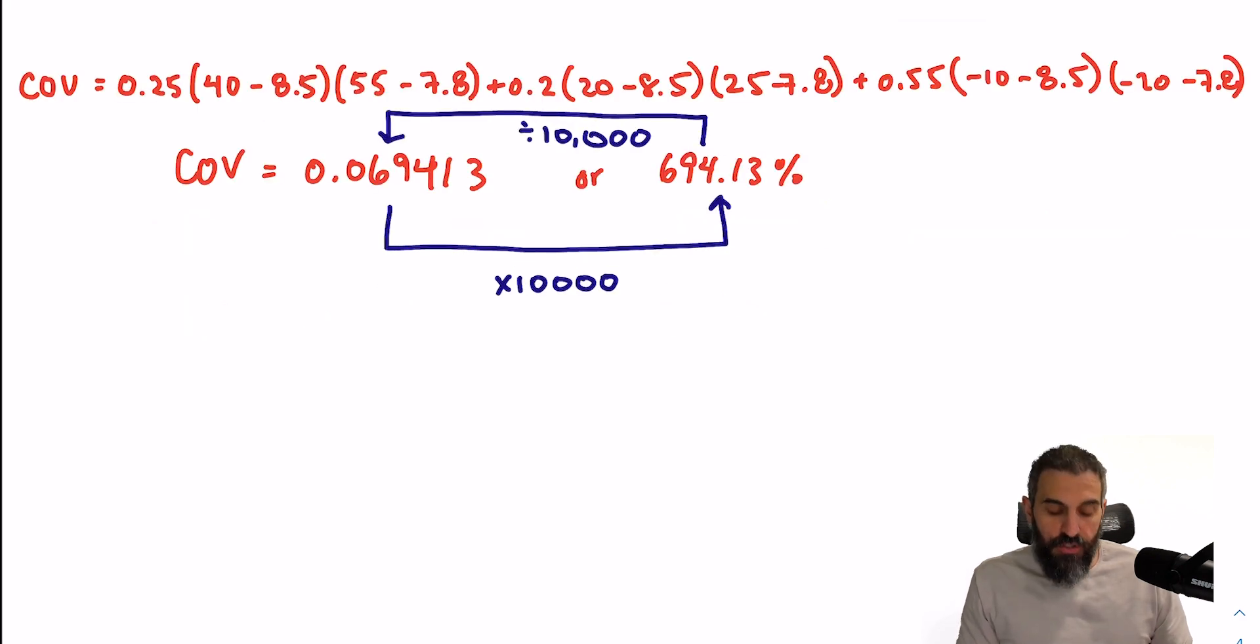Now for the correlation coefficient. To find the correlation coefficient between the two stocks, you need to take the covariance and divide it by the two standard deviations. So if we're going to do this in percentages, I'm going to take my percentage covariance divided by my two standard deviations, so 21.51% times 32.27%. And that'll give you a correlation coefficient of approximately one.